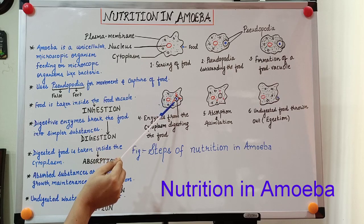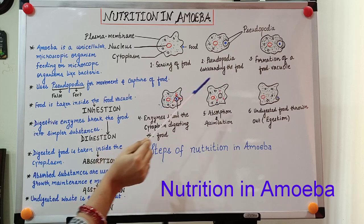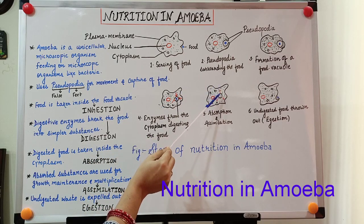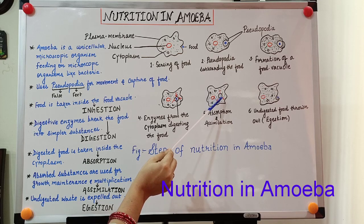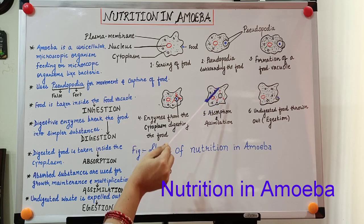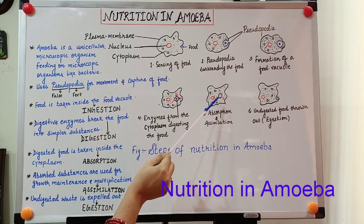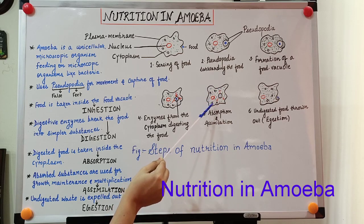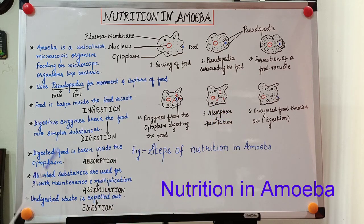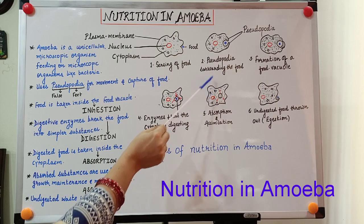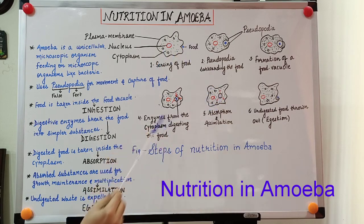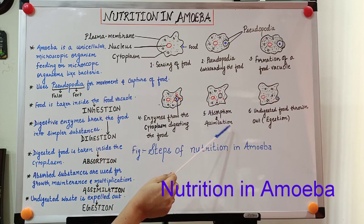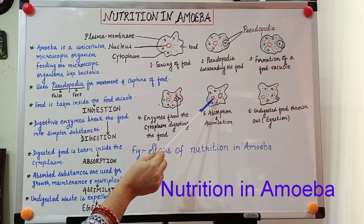As a result of digestion the food breaks into very small pieces, and these pieces are in such a form that they may be taken up by the cytoplasm. Once the food has been converted into simple soluble substances, these substances simply diffuse from the food vacuole into the cytoplasm of amoeba. This process is called absorption. When these substances have been absorbed, they are utilized for growth, maintenance, and multiplication. This process is known as assimilation.